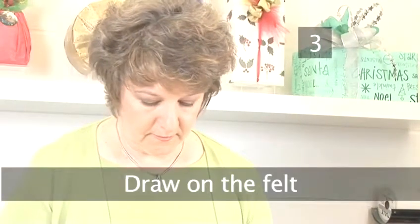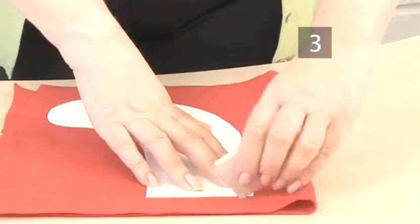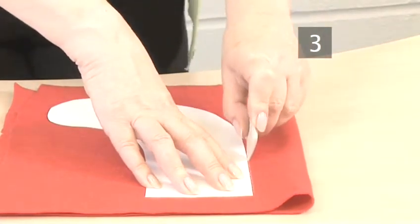Step 3. Draw on the felt. Fold the felt in half or use two separate pieces. Then place the template on the felt and draw around it in chalk.